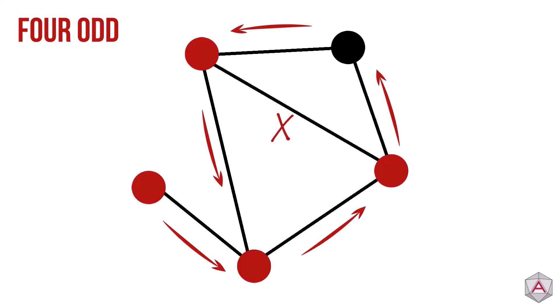Now if we have a graph with four odd nodes, we're back to the same problem as the Königsberg graph. There will always be an edge that we can't cross. This is because we can no longer start and end on the odd nodes. Some odd nodes have to be in the middle of our path which makes it impossible to cross every edge once.